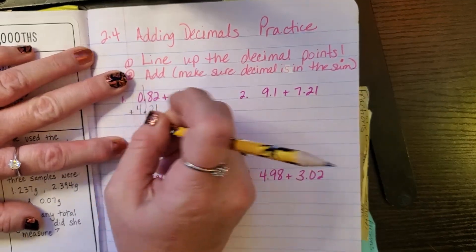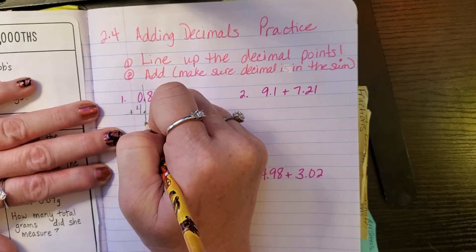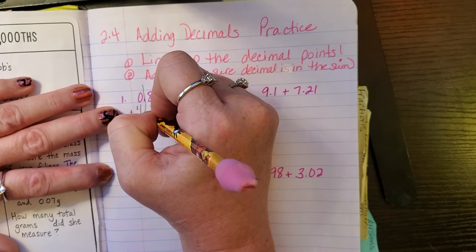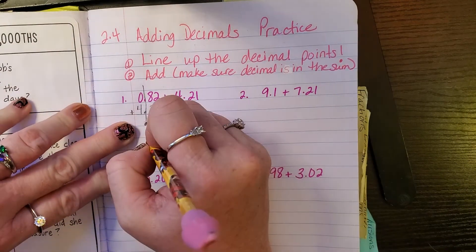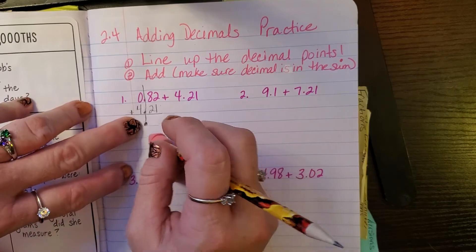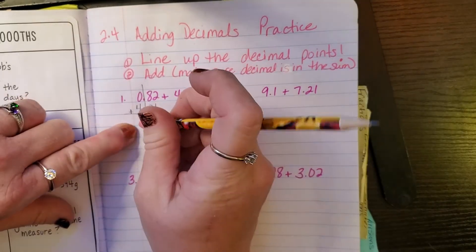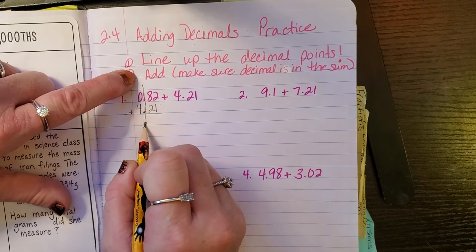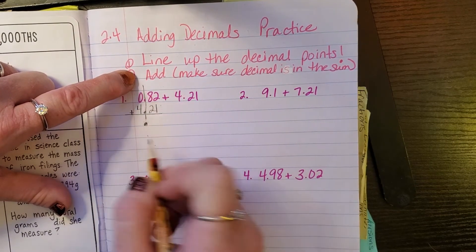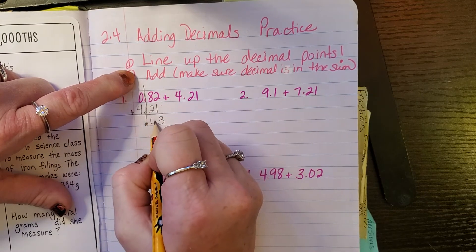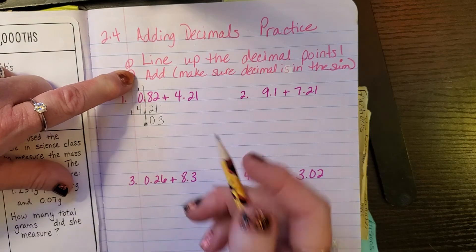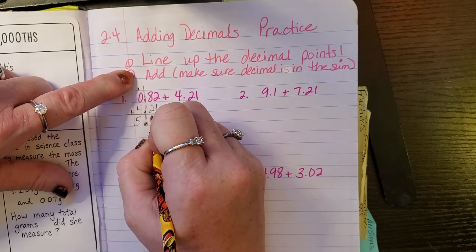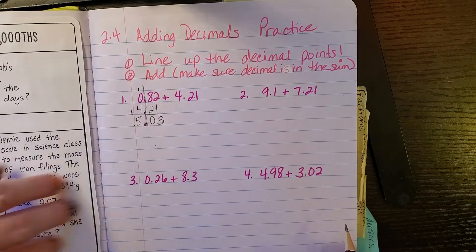You need to make sure the decimal in the second part of your problem is directly underneath the first decimal. And then put that decimal in the same line in your answer. It can be a little obnoxious, but make sure we know it's a decimal — please don't give us a tiny dot we can't see. Make sure we know you have a decimal place there. Now we add — that was step one, line up the decimal. Now: 2 plus 1 is 3, 8 plus 2 is 10, put the 0 and carry the 1, then 4 plus 0 is 4 plus 1 is 5. The answer is 5.03.